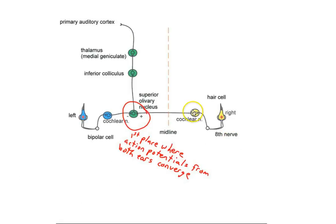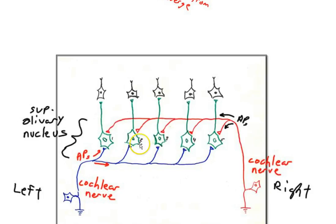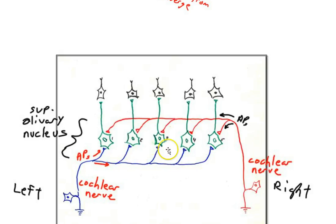In the superior olivary nucleus, here's the right cochlear nerve coming in and the left cochlear nerve coming in. The green cells — one, two, three, four, five — are the superior olivary nucleus cells; a nucleus is just a cluster of neurons. Each incoming axon branches, so action potentials split and travel to all cells. In the left nerve, action potentials arrive at cell one first, then take progressively longer to reach cells two, three, four, and five. The same principle applies for the right nerve.